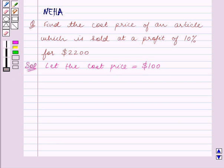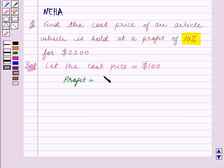We are given that profit is 10%. So now we will calculate the profit for this cost price which is $100. So we get profit is equal to 10% of the cost price which is $100. This is equal to 10 upon 100 into $100. Zeros get cancelled and this is equal to $10.